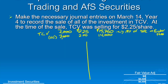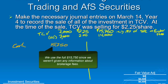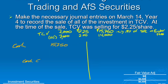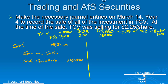Let's look at the journal entries. For the short-term investment, we debit cash $15,750, credit the investment account for the original $14,000, and credit gain on sale for the difference of $1,750. This records the sale of our investment in TCV. For the long-term investment, the entry is almost identical.